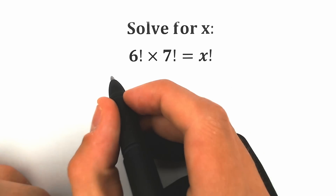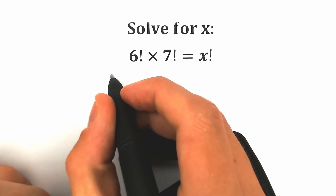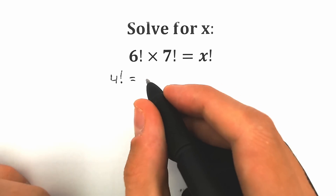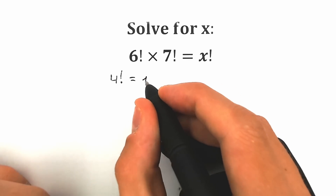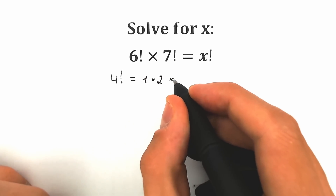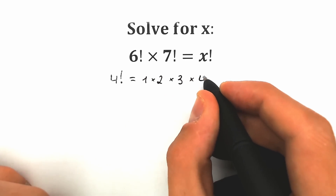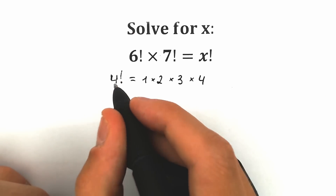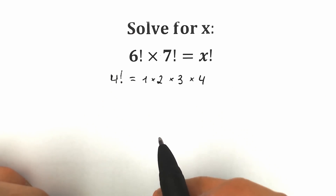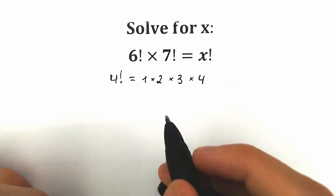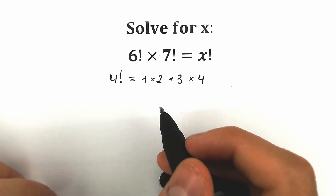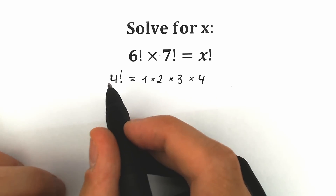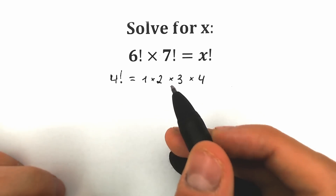First of all, just imagine we have 4 factorial. Everyone knows that this is a product from 1 to 4: we have 1 times 2 times 3 times 4. This is a basic school thing — if we have 4 factorial, this is a product from 1 to 4. But I want to show you a really great trick, so let's multiply both sides — left side and right side — by 5.